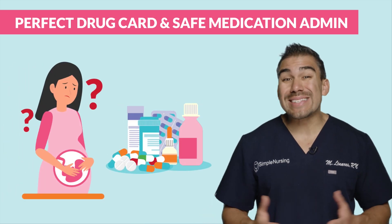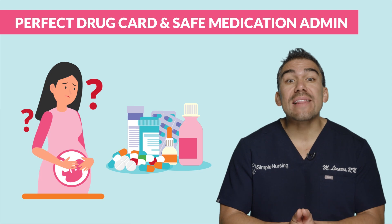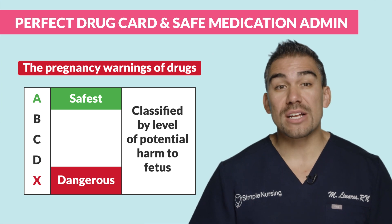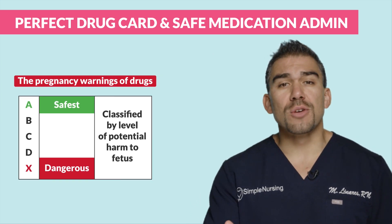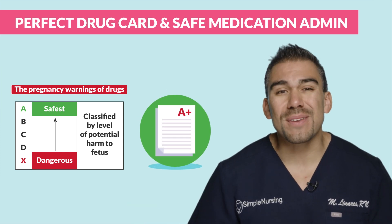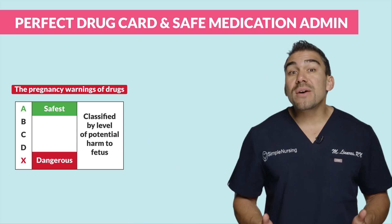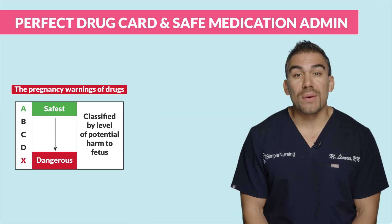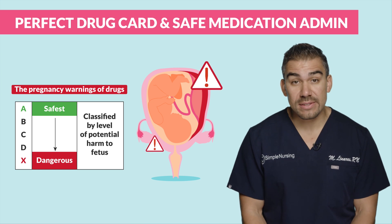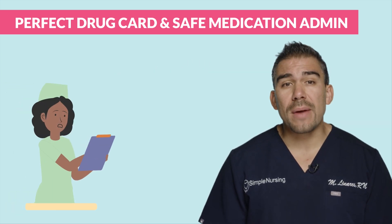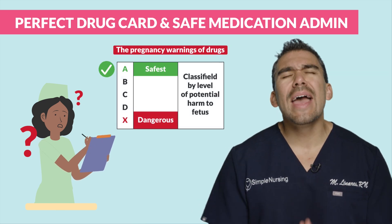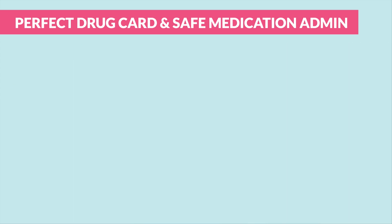A little side note: are drugs pregnancy safe? Well, some instructors love to highlight this part. These are the pregnancy warnings of drugs, classified by level of potential harm to the fetus. A is the most safe — just like getting an A-plus in class. The farther you go down, the more you have to worry, down to X, which is the most dangerous and causes the most harm to the fetus. On your exams, if a question asks which medication to give a pregnant client, always go with class A and never class X.